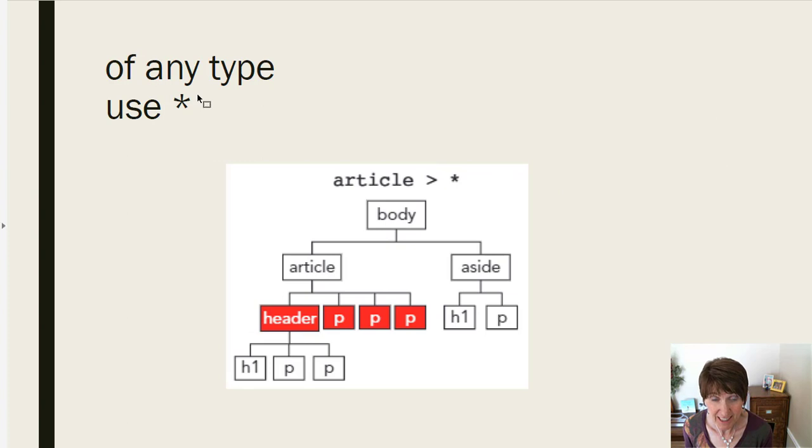Then the asterisk, the asterisk means any type. So now this will apply to any element that is a child of article. And so that's what the asterisk says. It doesn't matter what it is. So in this case, it'll apply to the header element and the three P elements.